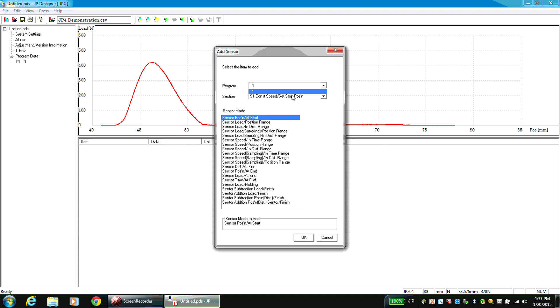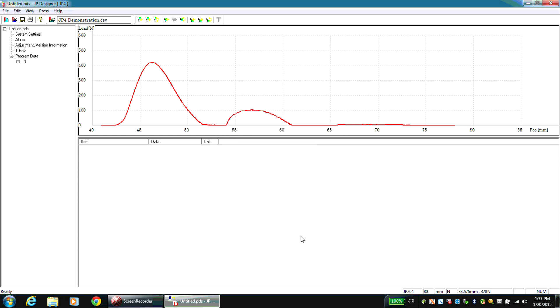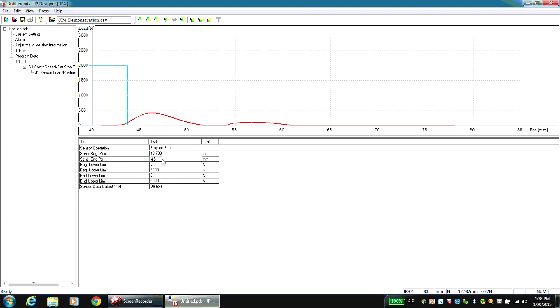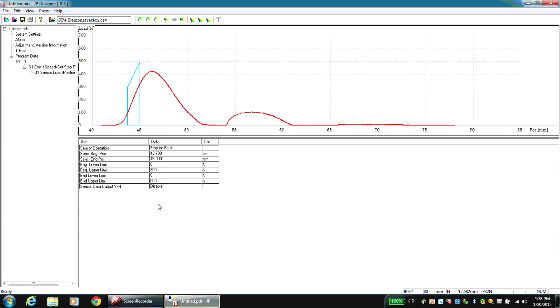As stated earlier, a wide range of sensor types are available. Click the OK button, and the sensor will be added to a program tree on the left. Set the window parameters around the graph features that you would like to control. In this example, for Sensor Load Position Range, the sensor beginning and end positions are set relative to Mechanical Home. The upper and lower load limits are set at the ends of this range. The sensor will activate if the range limits are violated.